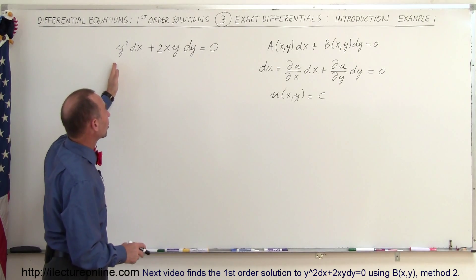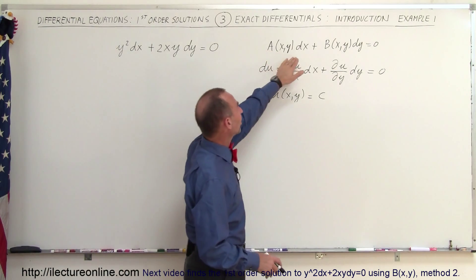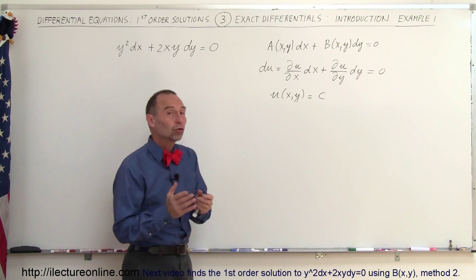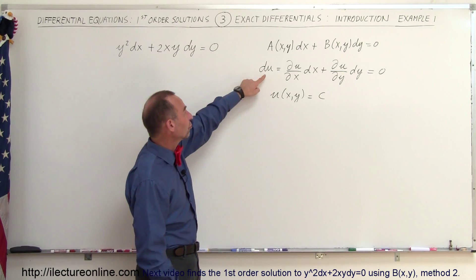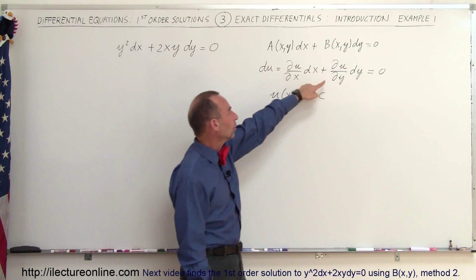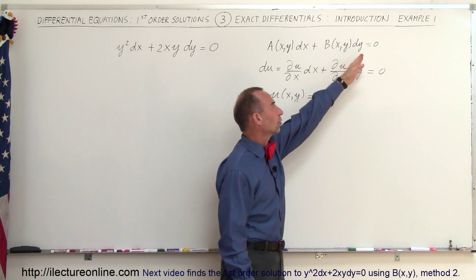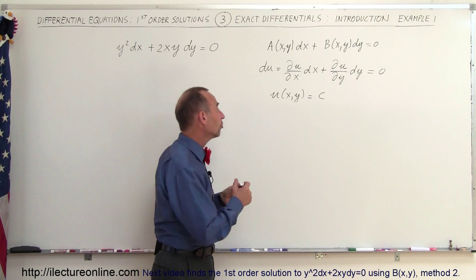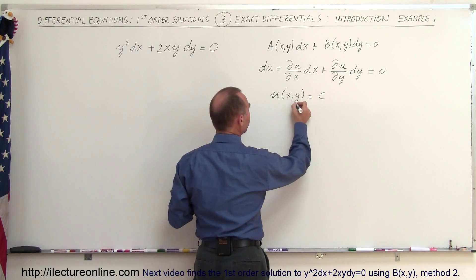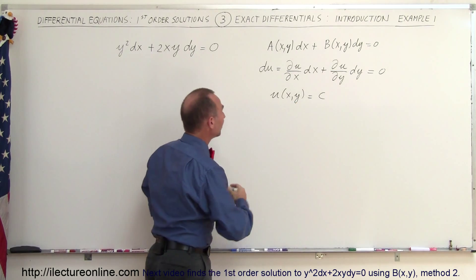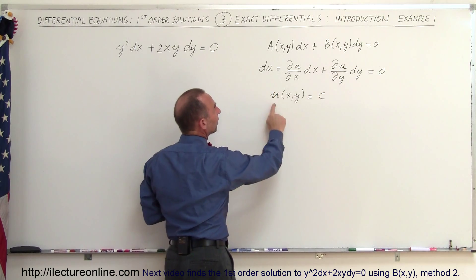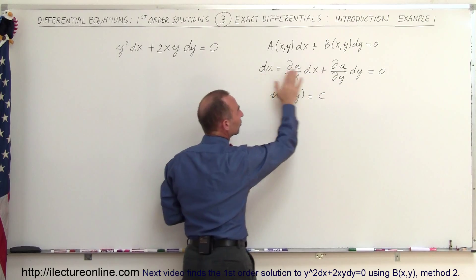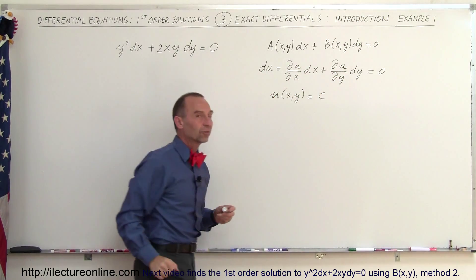Remember that this is the general format of M dx plus N dy equals 0. If there is a general solution u, we take the differential du, which must equal 0 — just like our equation above. Taking the integral of du, the result must equal some constant, because du equals 0.